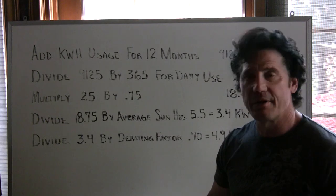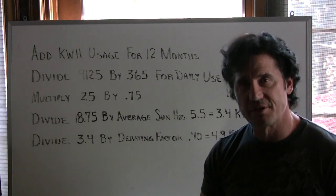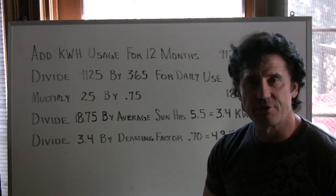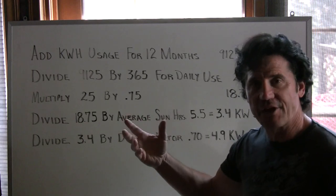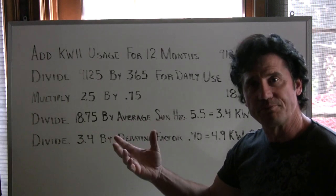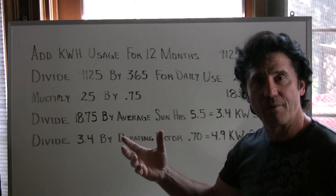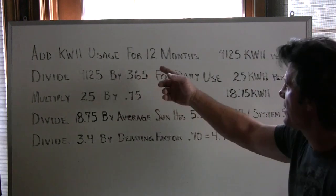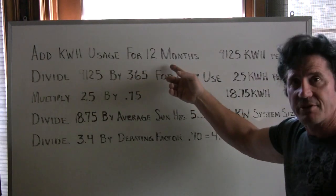I put a chalkboard together here to show you some numbers — instead of just verbally saying it, I want to show it to you. You can copy it down if you'd like. So the first step is to take your 12 months worth of electric bills and add up all the kilowatt hour usage for 12 months.